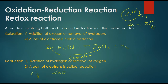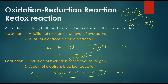Zinc oxide plus carbon gives zinc plus carbon monoxide. This is the reaction of the reduction of oxygen. Zinc oxide is reduced — this is the reduction.